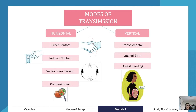There are two main modes of transmission: horizontal and vertical. Horizontal transmission — which I think of as direct — includes direct contact, indirect contact, vector transmission, and contamination. Vertical transmission includes transplacental transmission, vaginal birth, and breastfeeding. For example, with breastfeeding, if the mother has pathogens they can be transmitted to the child through milk; the same applies for vaginal birth and transplacental transmission.